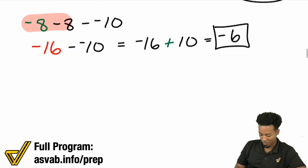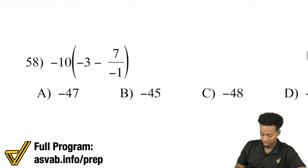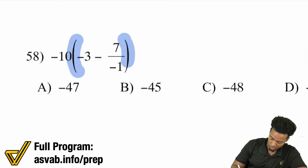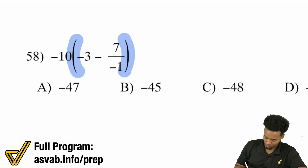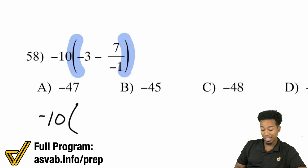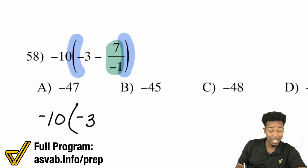Let's keep it going. Let's look at the next one with fractions. We're going to take care of the group — the parentheses — first. So we have negative 3 minus 7 over negative 1. 7 divided by negative 1 — that's going to be negative 7. Be careful because you already have a minus right there.